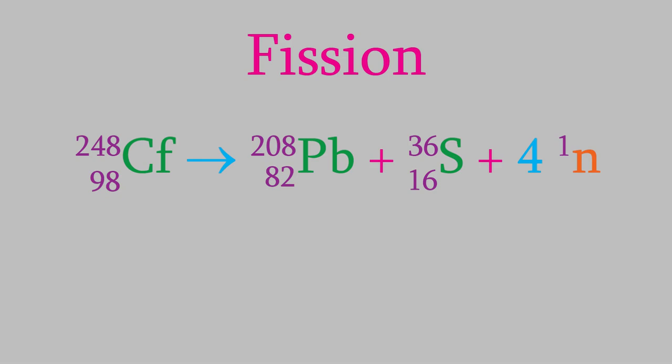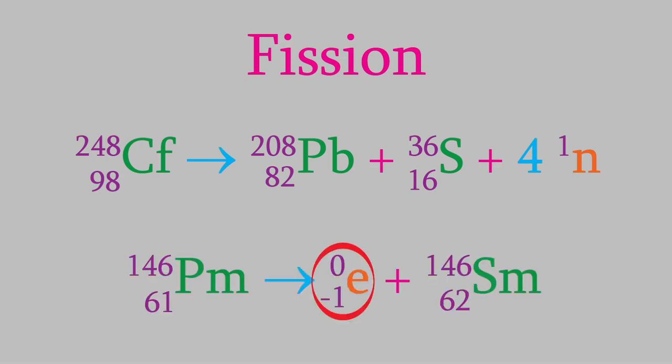For the atomic number, we need to think about the charge on a neutron. You might recall from the last video that we used a negative 1 for the subscript of an electron, because the charge on the electron is minus 1. For the same reason, the subscript on a neutron is 0, because neutrons have a charge of 0. If you look at the mass numbers on the right side of this reaction, you'll see that they are 208 for the lead isotope, 36 for the sulfur, and 1 for each of the four neutrons. That makes a total of 248, which is also what we had for the mass of the californium on the left side. That shows that this nuclear reaction is balanced.